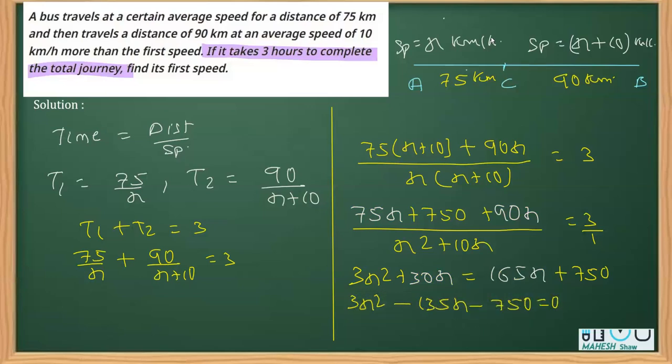After obtaining this quadratic equation, I can see I can reduce it by taking 3 as common. If I take 3 as common, I'll get x square minus 45x minus 250 equals 0.